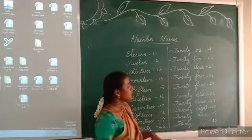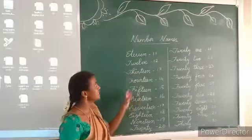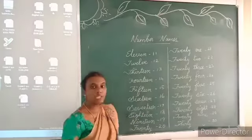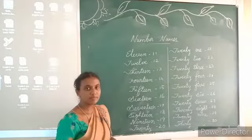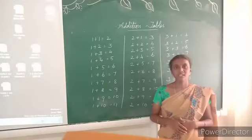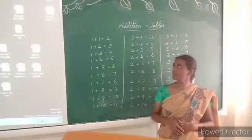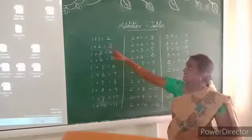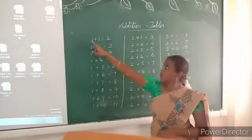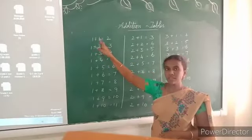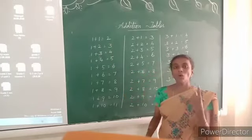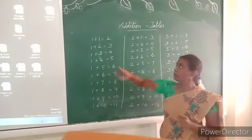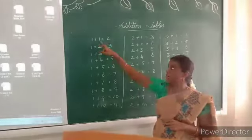Okay children, you have to practice the number names 11 to 30 in your room. Now we are going to revise the addition tables. Are you ready? Good. We have 1 plus 1 — so 1 in the hand, 1 in the finger, 1 after 2. If you add the numbers 1 and 1, we get 2.